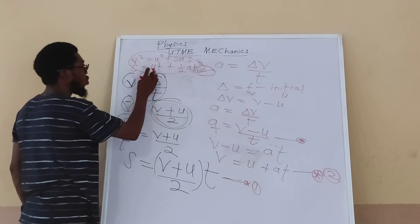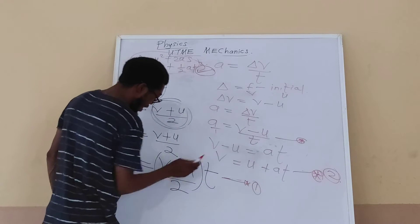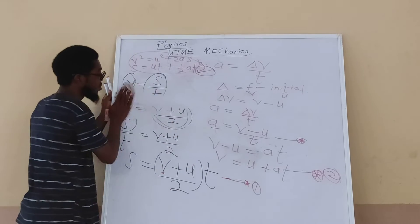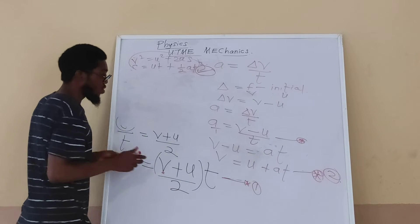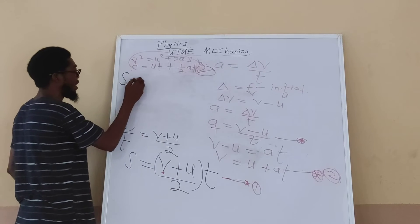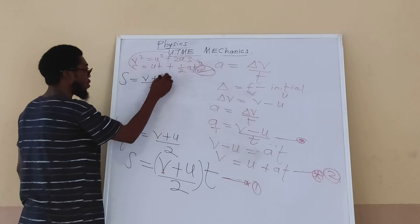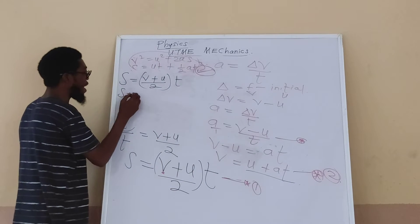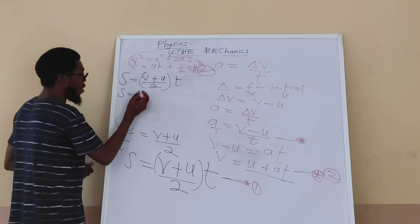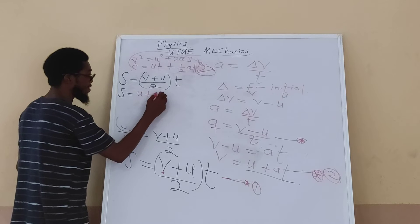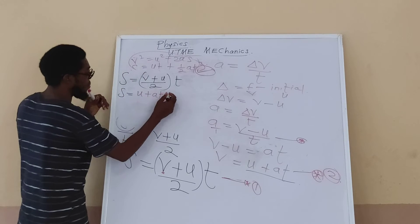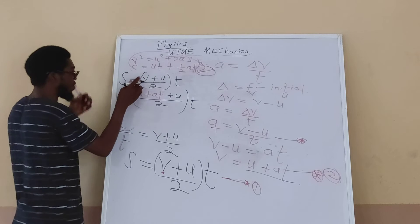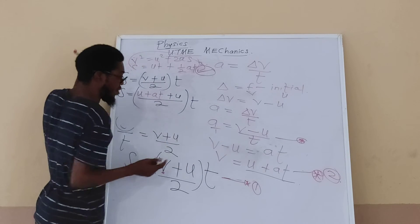To get s = ut + ½at², I take v = u + at and substitute it into the average velocity equation. Writing the average velocity equation again: s = (v + u) / 2 × t. Wherever I see v, I replace it with u + at. So s = [(u + at) + u] / 2 × t. This is the same expression, just with v replaced by the definition from acceleration.